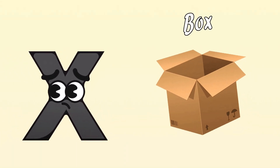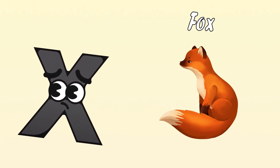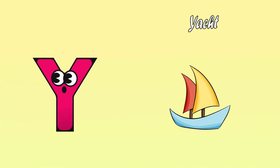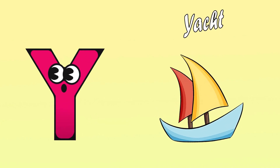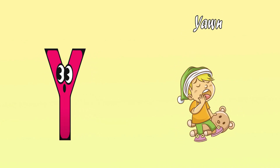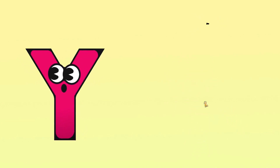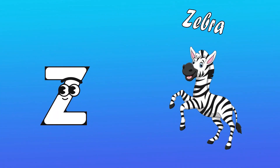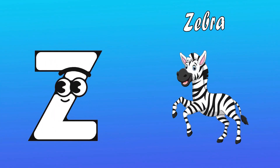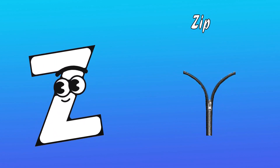X is for Box. X, X, Box. X is for Fox. X, X, Fox. Y is for Yacht. Y, Y, Yacht. Y is for Yawn. Y, Y, Yawn. Z is for Zebra. Z, Z, Zebra. Z is for Zip. Z, Z, Zip.